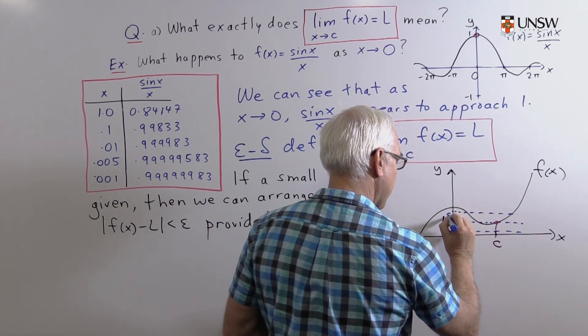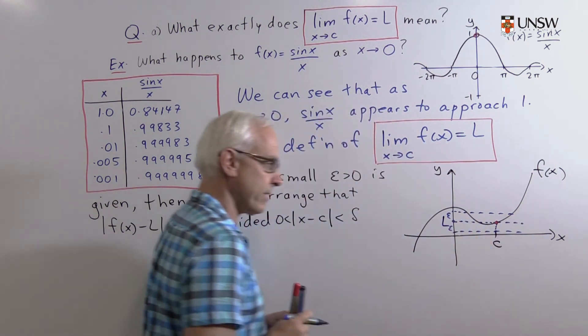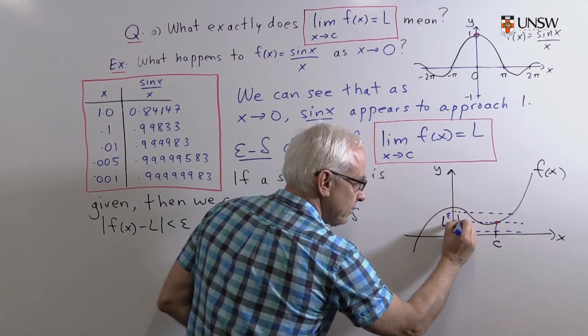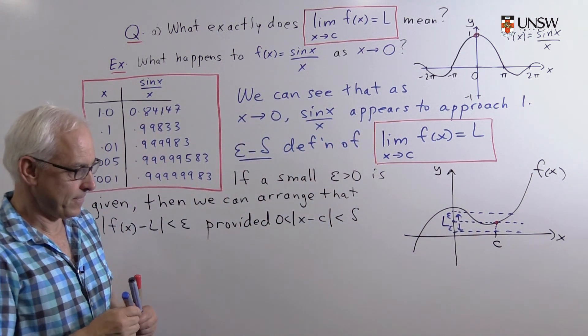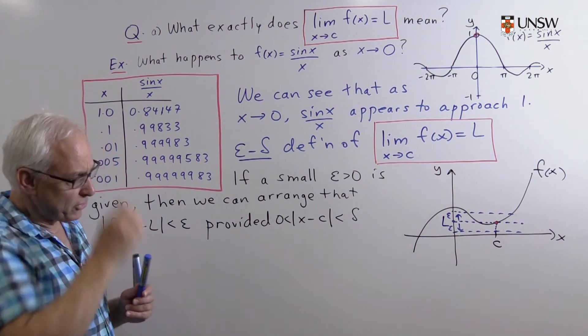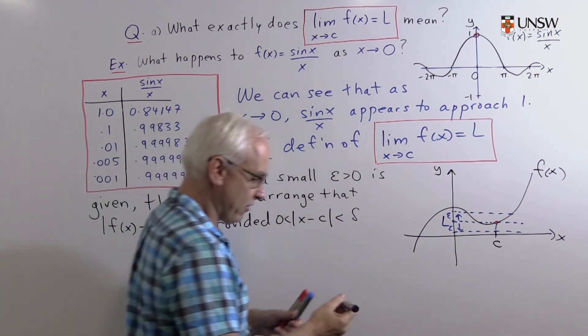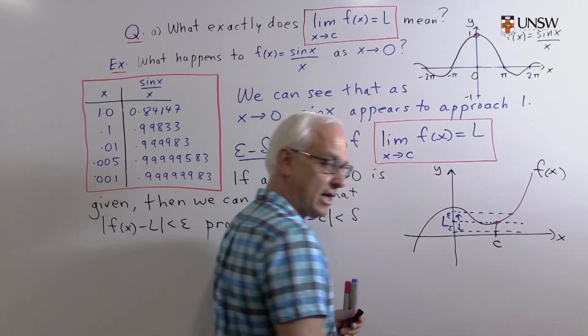What we're trying to do is we're trying to find a value of x, or a range of values of x near c, that will ensure that if x is within that band close to c, then the function's values are within epsilon of L.